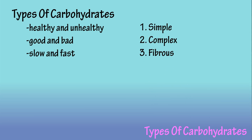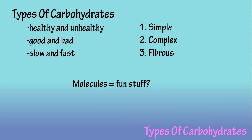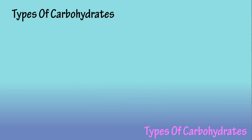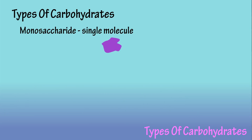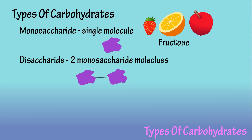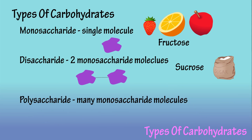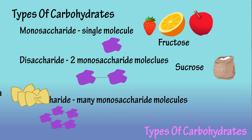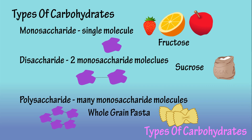Before we get into those classifications we need to look at molecules — it'll help you understand better. A monosaccharide is a single molecule, such as fructose, which is found in fruit. A disaccharide consists of two monosaccharide molecules, such as sucrose or table sugar, and a polysaccharide consists of many monosaccharide molecules, such as whole grain pasta.